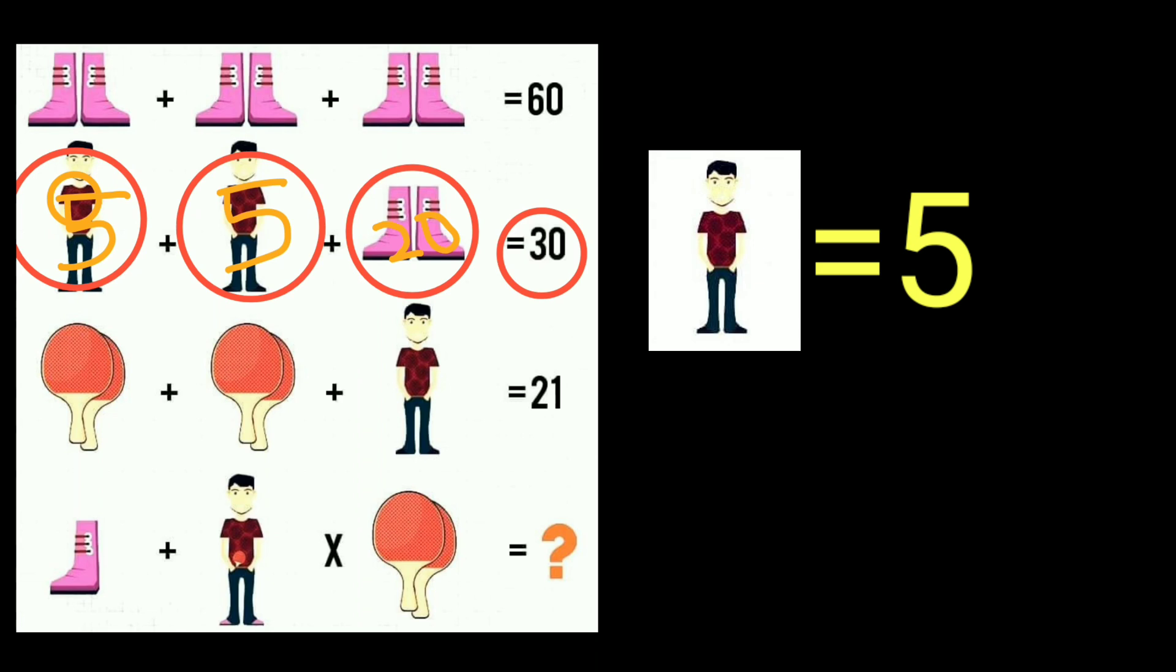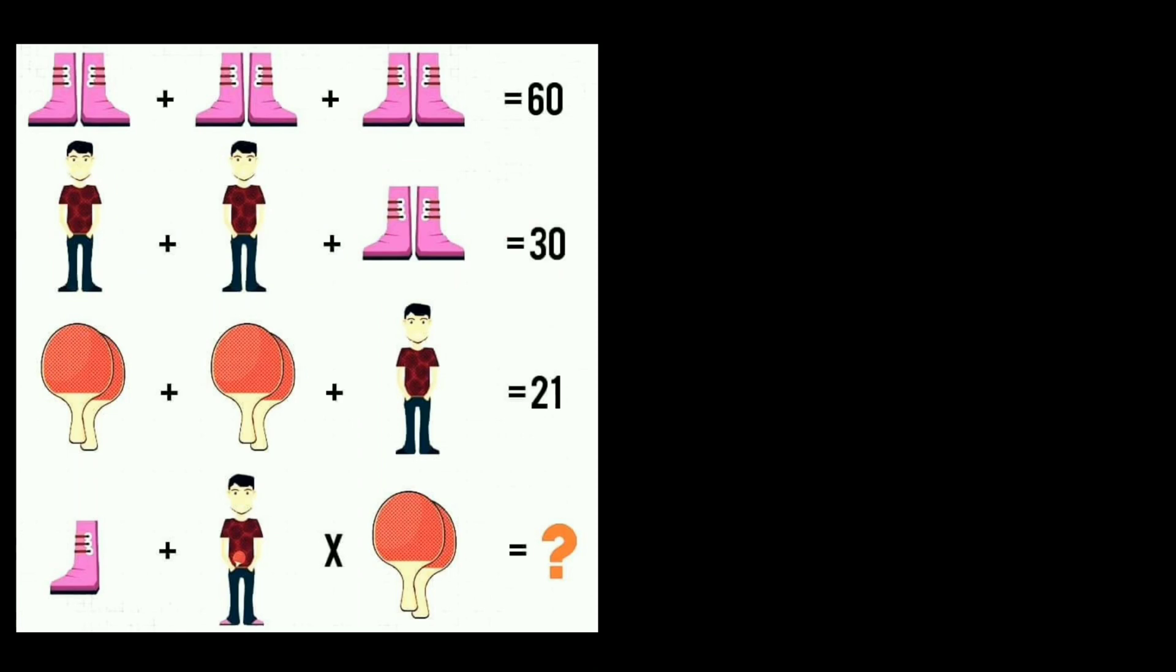Equation 2 also solved. Now look at equation 3. Here is a pair of badminton. Here also a pair of badminton. And here is one boy which equals 21.